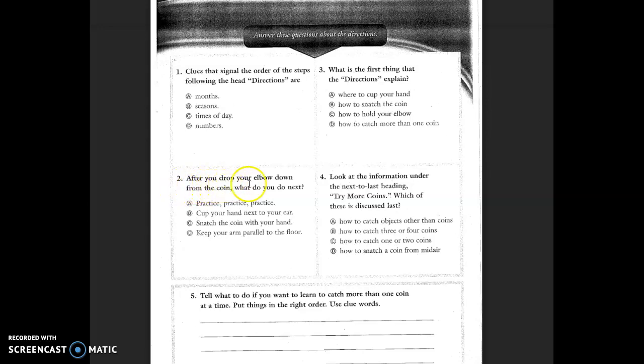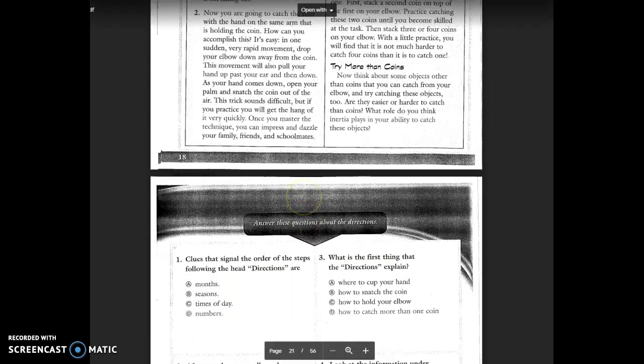Okay, two. After you drop your elbow down from the coin, what do you do next? So, as soon as you drop down your elbow from the coin, you've got to figure out what to do. Go back in the text and look. Is it practice, practice, practice? B, cup your hand next to your ear? C, snatch the coin with your hand? Or D, keep your arm parallel to the floor. Go back and find out when we drop our elbow down from the coin, and look what we do next.